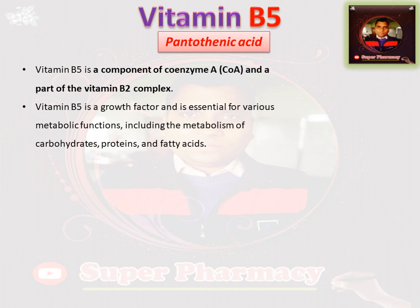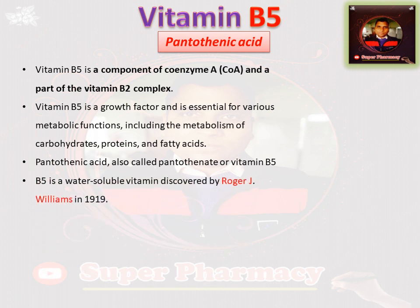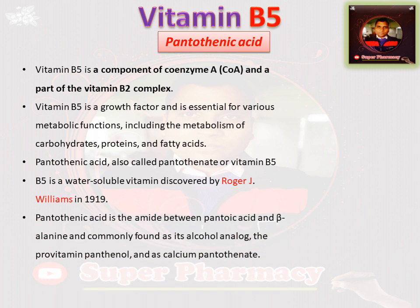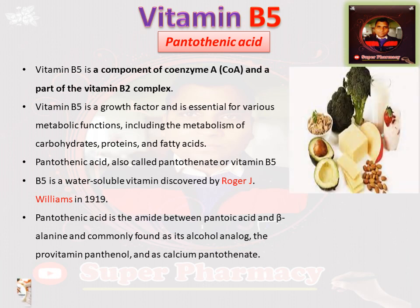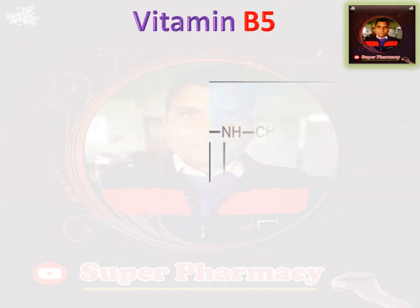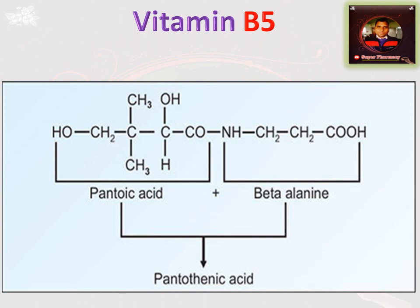Vitamin B5 is also called pantothenic acid or pantanoic acid. It was discovered by Roger J. Williams in 1939. Regarding its structure, it contains an amide linkage. Pantanoic acid and beta-alanine combine together — when both structures are joined, pantothenic acid is formed. Its pro-vitamin form is pantothenol, and the supplemental form is calcium pantothenate.